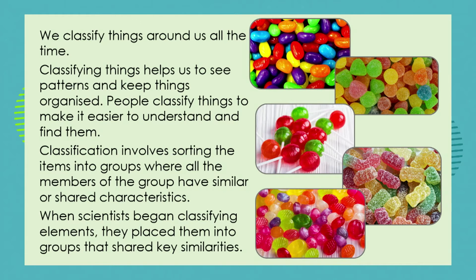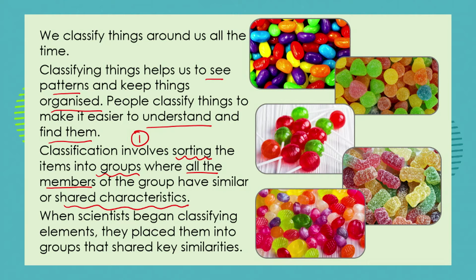We classify things all around us all the time and it makes us able to see patterns, keeps things organized, helps us understand and find things. The first step in classification is sorting items into groups where all the members share similar or shared characteristics. Thinking about science, when scientists began classifying elements, they placed them into groups that shared key similarities. So let's have a look at our example of the sweets — we've sorted them as our first step into groups where all the sweets in the group have similar shared characteristics.